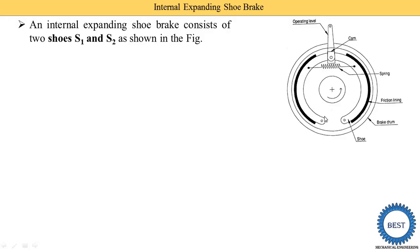Why is its name given 'internal expanding shoe brake'? The outer part is the brake drum, and inside the brake drum the complete brake — meaning all the components of the brake — are installed. That's why it is called 'internal.'